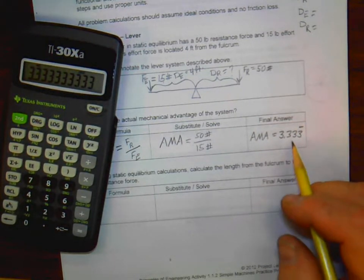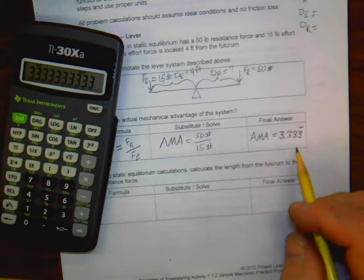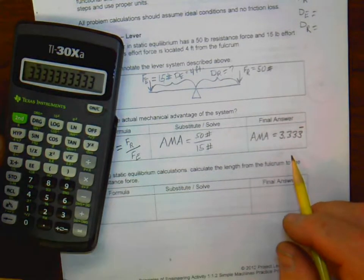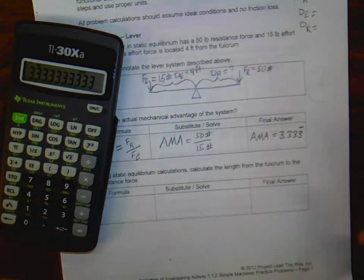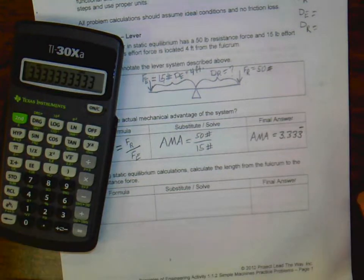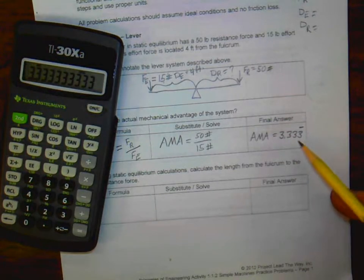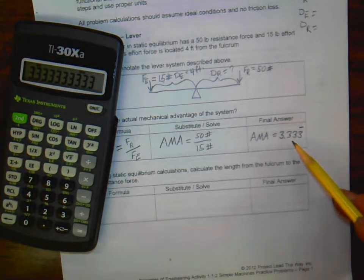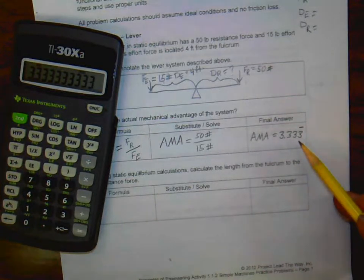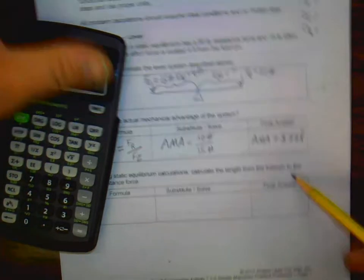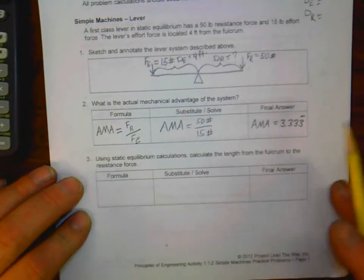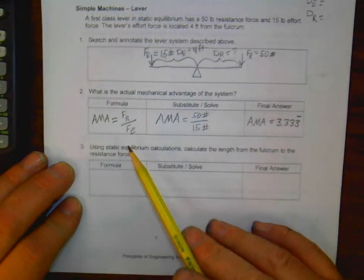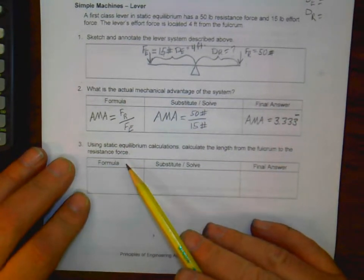And I'll talk more about that later as we go. Other teachers will talk about significant figures and making sure that we are using significant figures correctly. I'm a traditional machinist and an engineer, mechanical engineer. We typically work to three decimal places. So for right now, I'm going to just say, let's work and keep to three decimal places so we all get some of the same calculations. All right. Part three of this, it says, using static equilibrium calculations, calculate the length from the fulcrum to the resistance force.